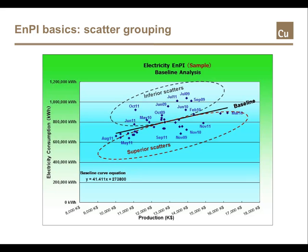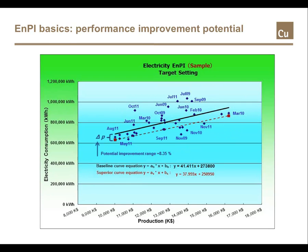Once the baseline is defined, the scatter can be divided into two groups using the baseline as the divider. Above the line are inferior scatters; below the line are superior scatters. Using the same method, you can then create an average regression line for the group of superior scatters, shown here as a red dotted line.